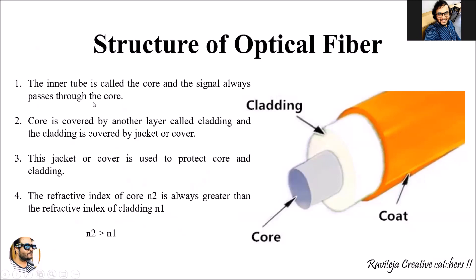Looking at the structure of an optical fiber, the inner layer is called the core — the signal always passes through the core in the form of light. That core is covered by another layer called cladding, and the cladding is again protected by an insulation layer, which is a rubber coating or some kind of insulating coating.